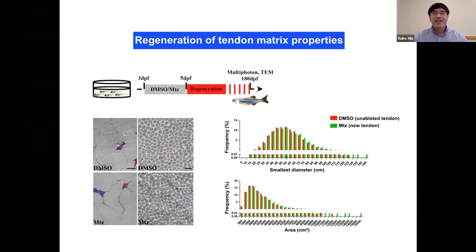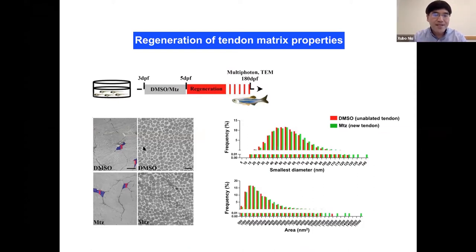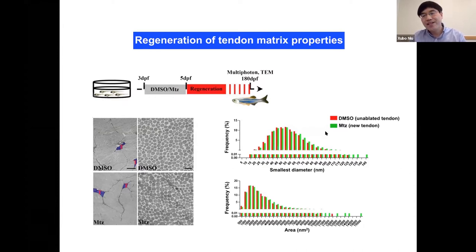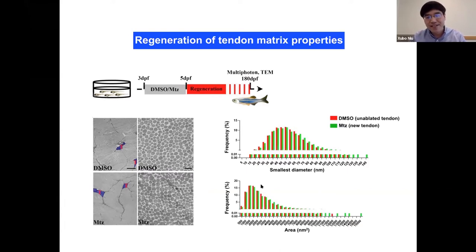To know whether zebrafish can eventually regenerate a functional tendon, we looked at the new tendon tissue after six months — examining its morphology and structure. Using TEM images showing transverse sections of the tendon tissue, we compared DMSO normal tendon to the MTZ regenerated new tendon. You can see tendon cells surrounded by collagen fibrils, and at higher magnification the collagen fibrils look very similar between normal and new tendon. We quantified the diameter and area of each collagen fibril and found the normal and new tendon are very comparable to each other.